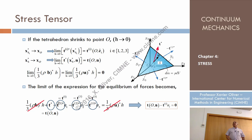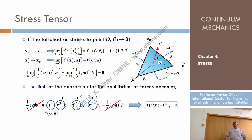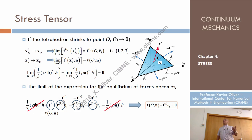T1* is replaced by T1 — the traction vector at point O in direction E1. T2* becomes T2 — the traction vector at point O in direction E2. T3* becomes T3 — the traction vector at point O in direction E3. All are now evaluated at point O, which is important.